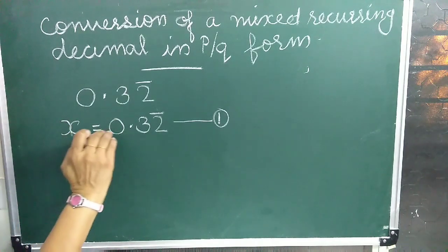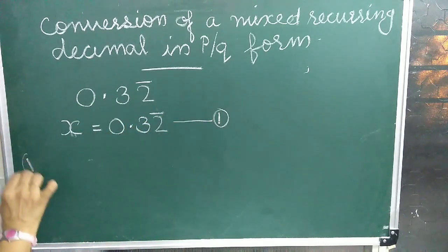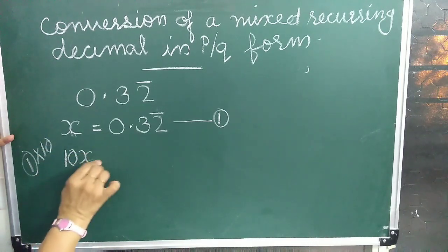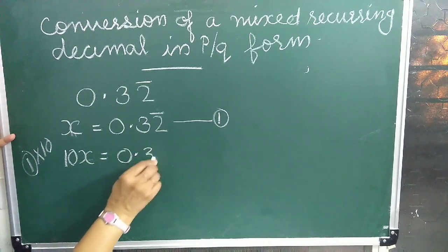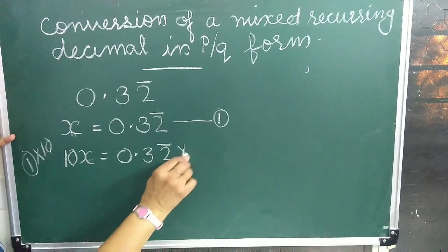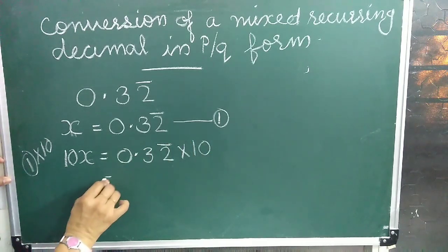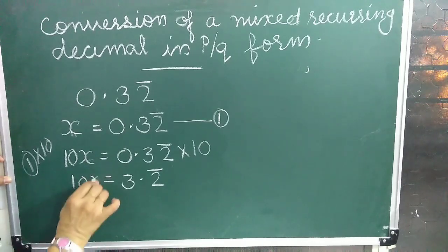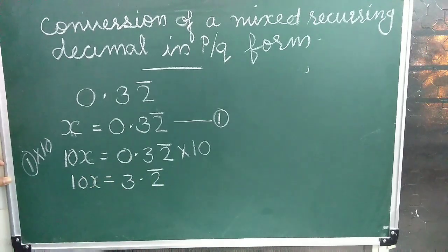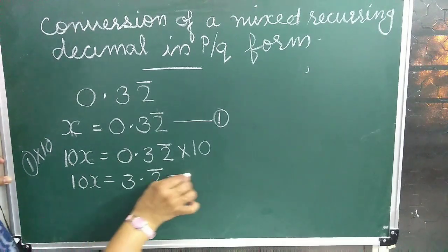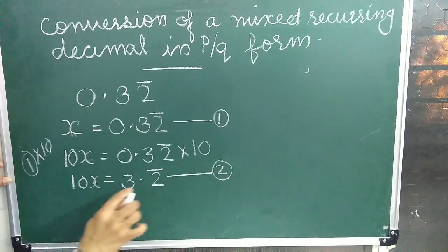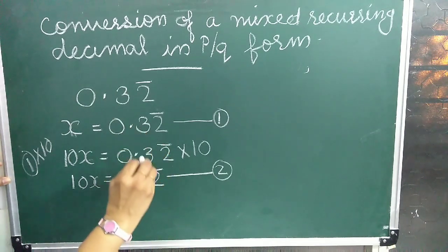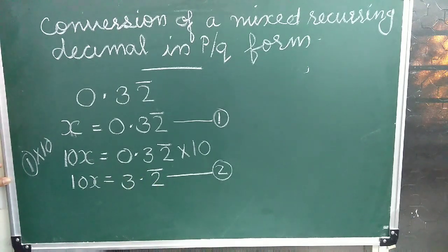First, we multiply equation 1 by 10. So, 10x is equal to 0.32 bar into 10, that is 3.2 bar. So 10x = 3.2 bar. This is equation number 2, and this equation is a pure recurring decimal.